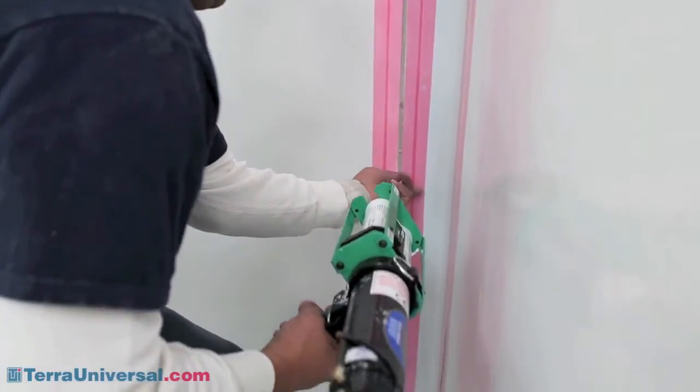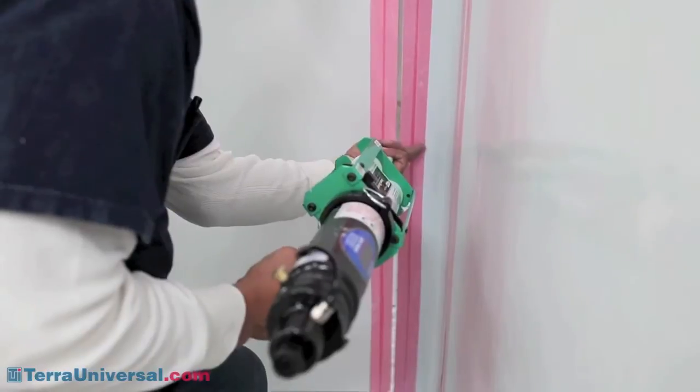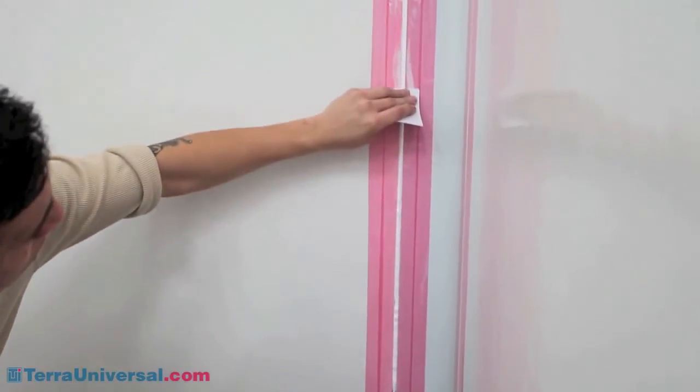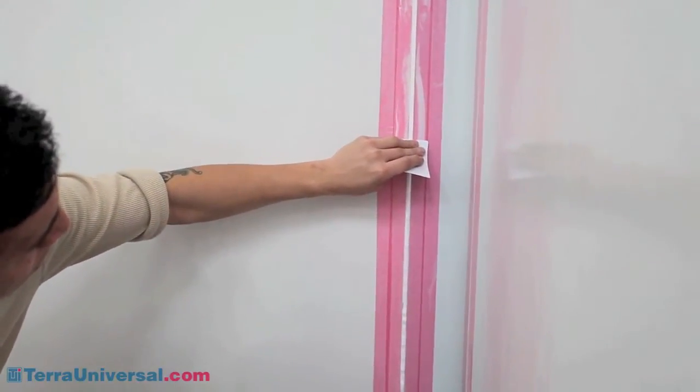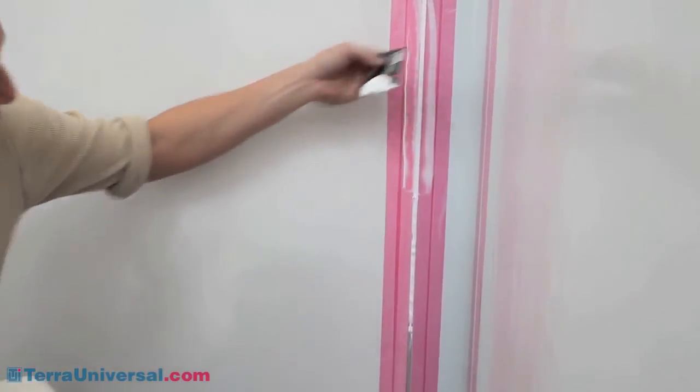A caulking gun is recommended for seaming, since the open time of the sealing container is very short. See our installation manual for a range of drying times in various environmental conditions. We recommend that a second person use a scraper to complete the smoothing of the sealant as it is applied.